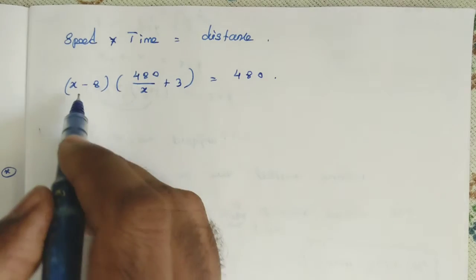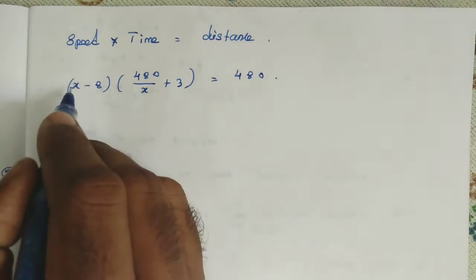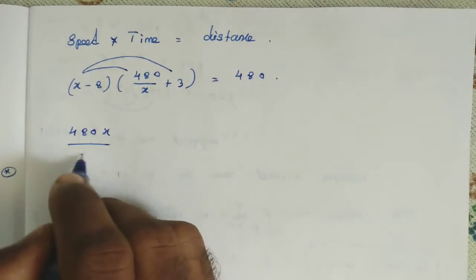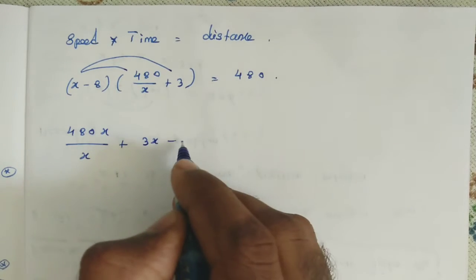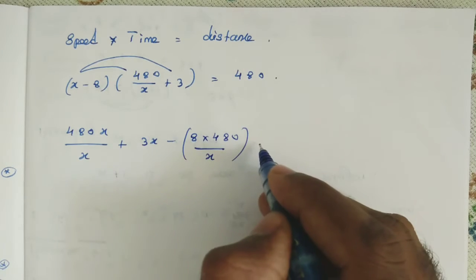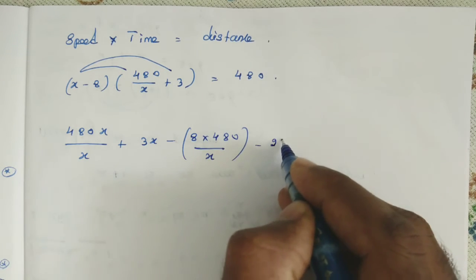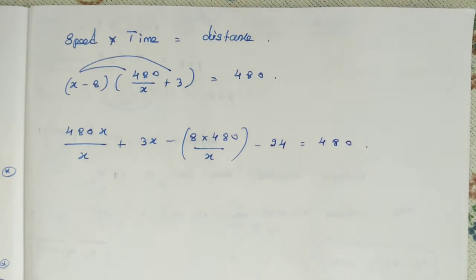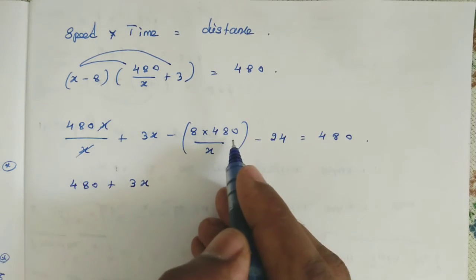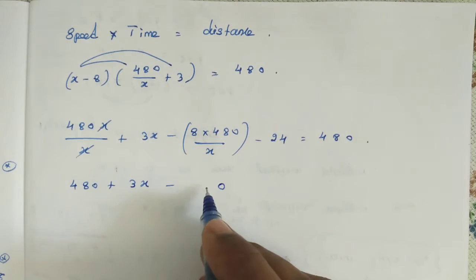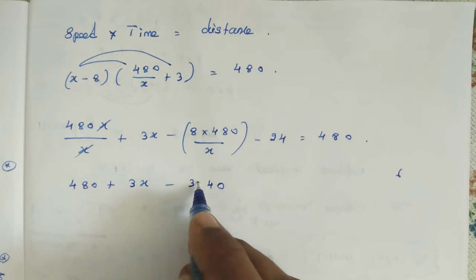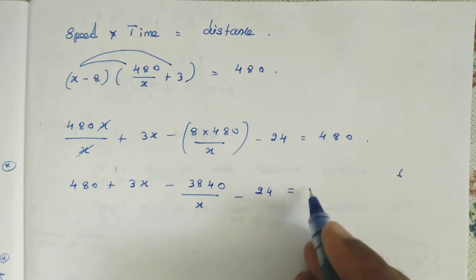Now we use the distributive property to multiply. x into 480 divided by x gives 480, and x into 3 gives 3x. Then minus 8 into 480 divided by x gives minus 3840 divided by x, and minus 8 into 3 gives minus 24. So we get: 480 plus 3x minus 3840 divided by x minus 24 equals 480.